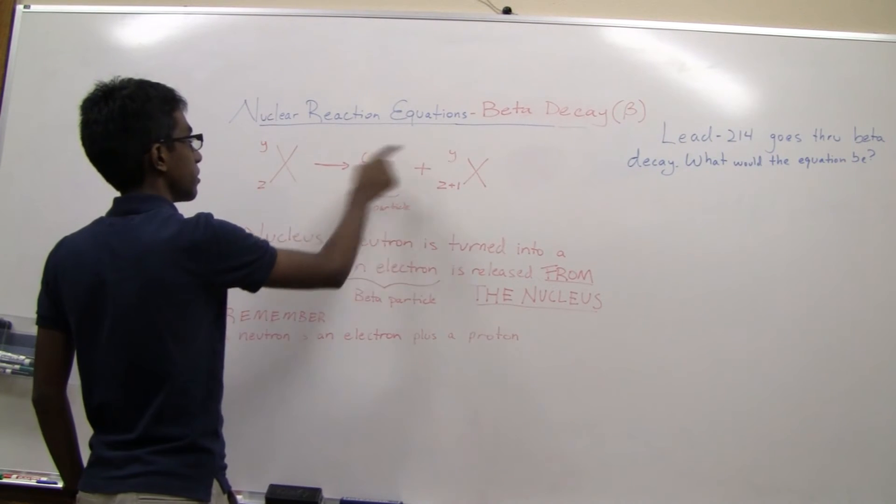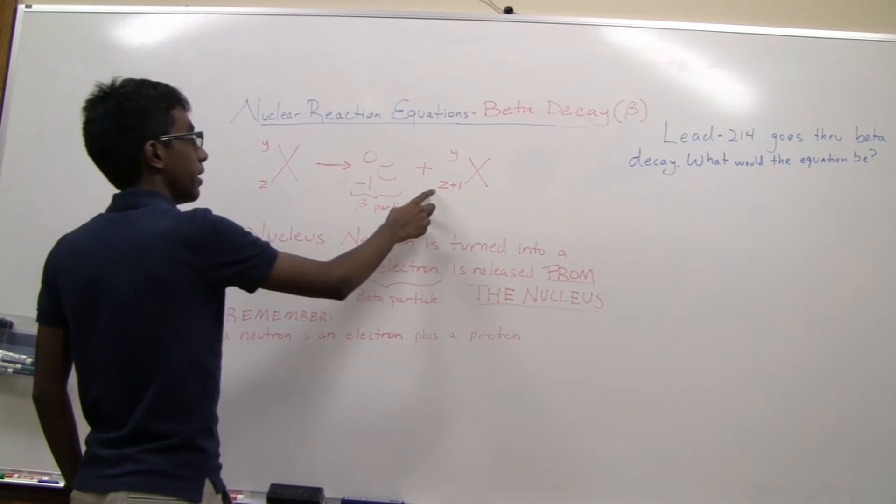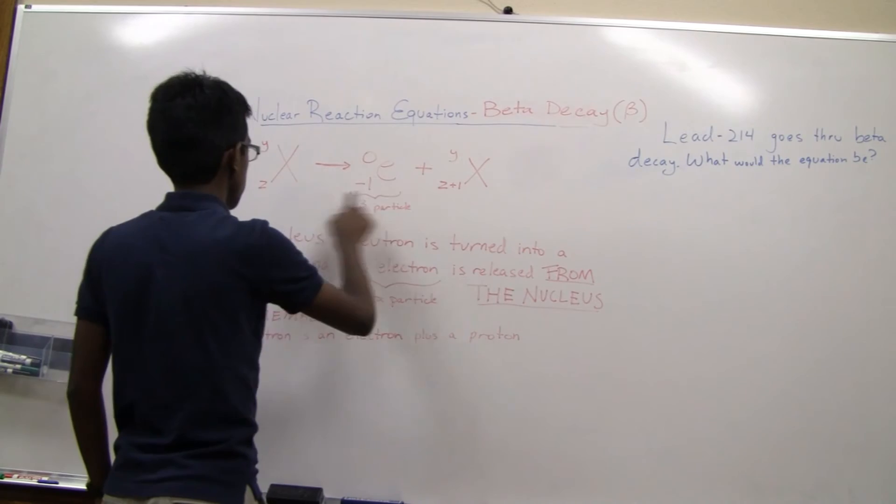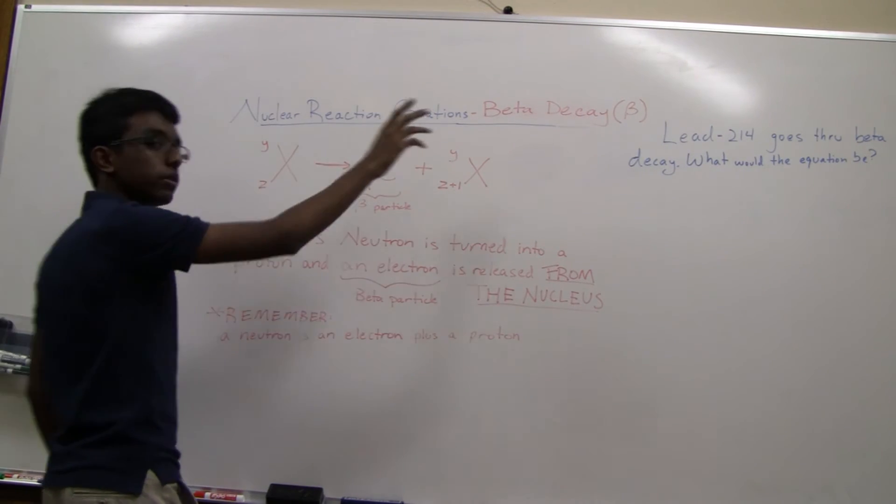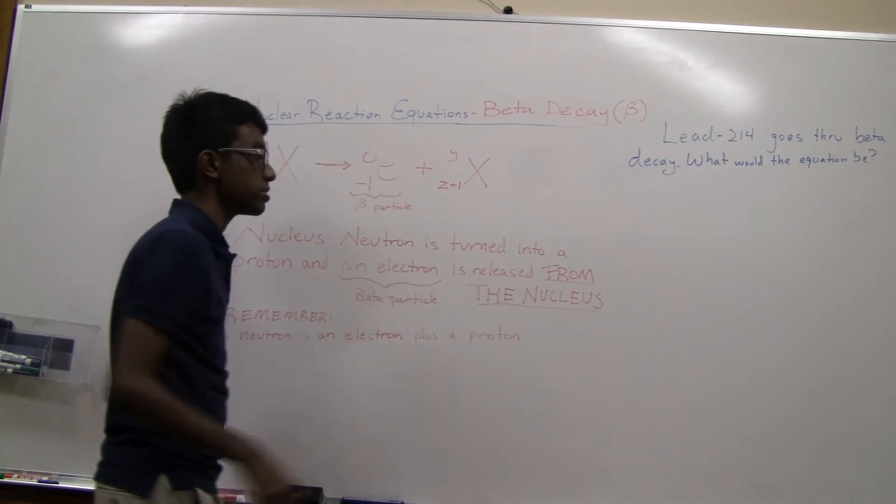If there's a zero here, then you're going to have to have Y here. But then you're going to get Z plus one here, because Z plus one minus one will equal Z. We're going to do an example now, so this makes a bit more sense.